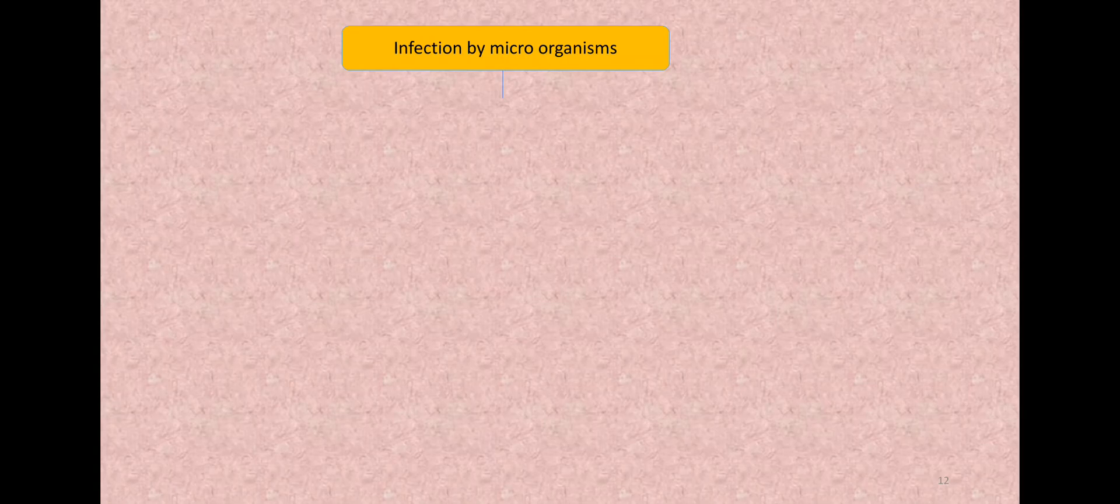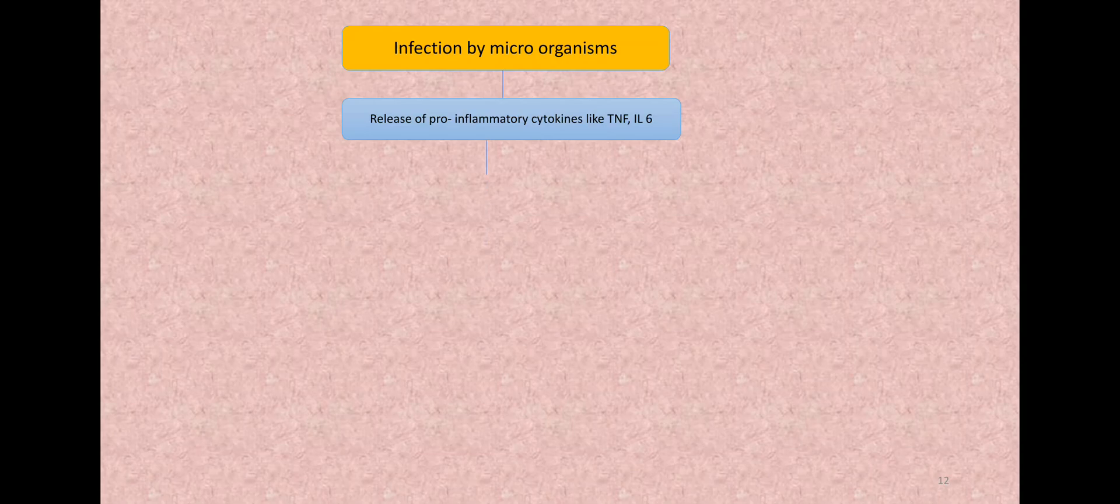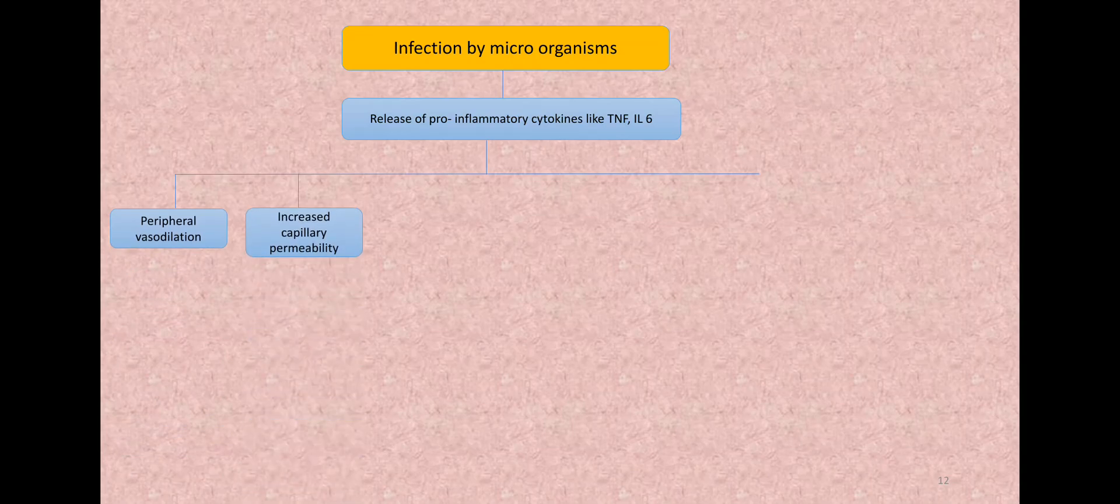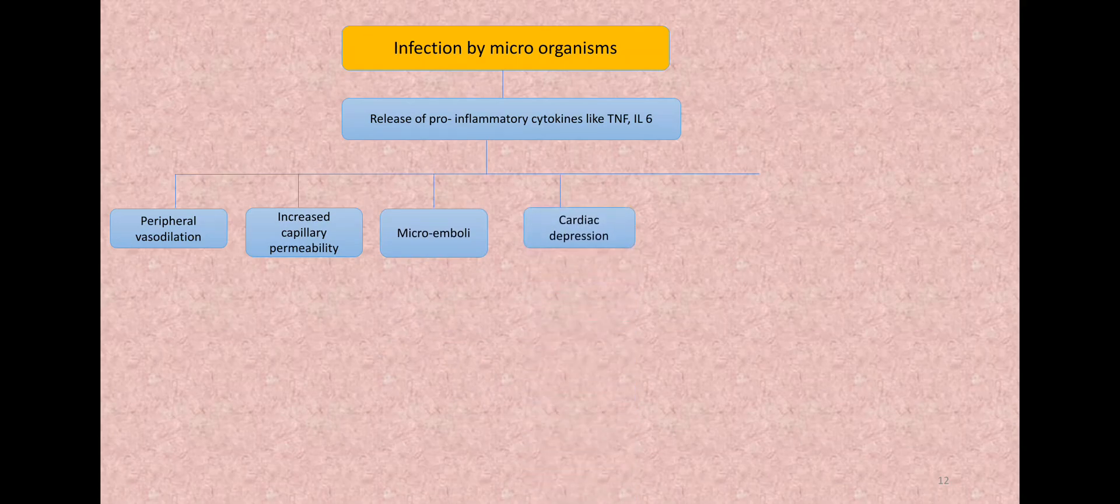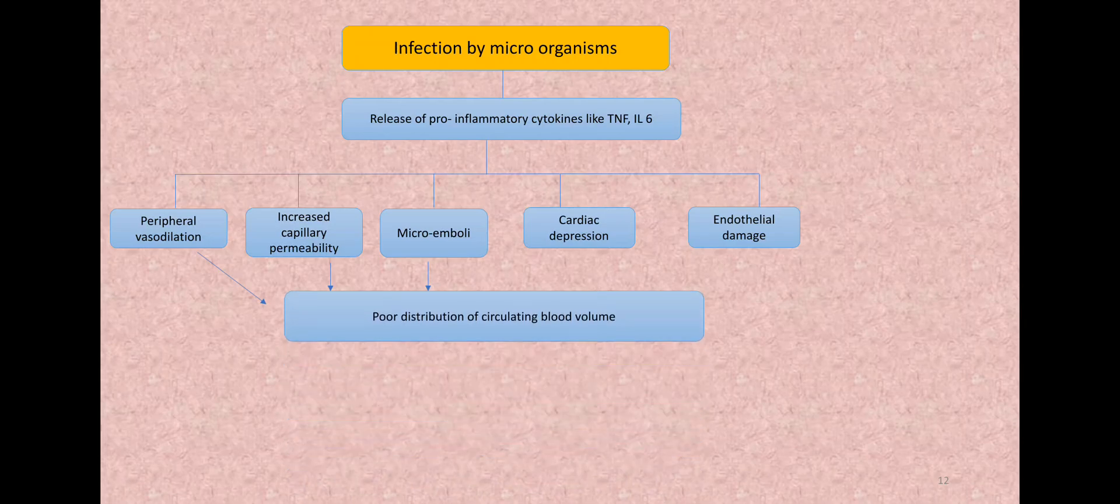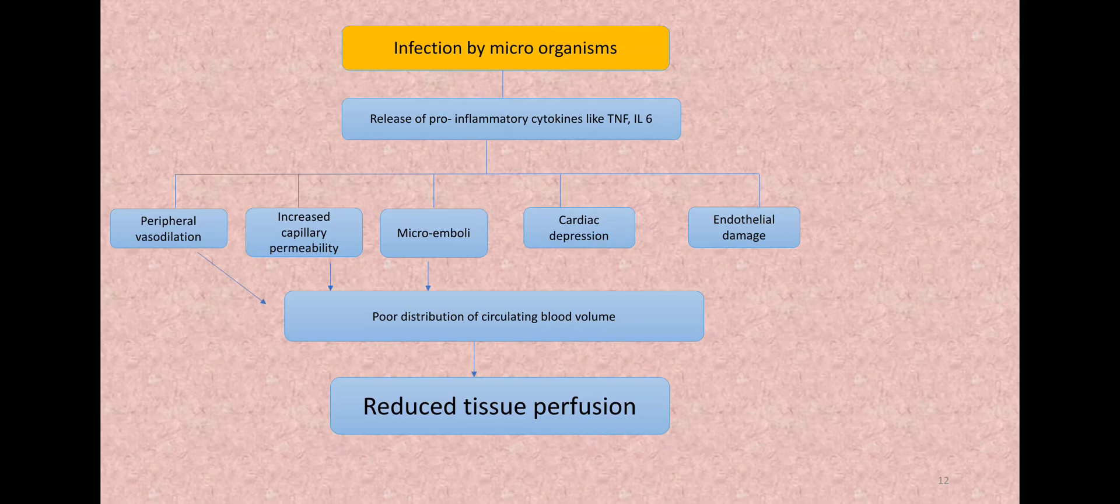So we'll just look at the mechanism. Infection by the microorganisms. There will be release of pro-inflammatory cytokines like tumor necrosis factor and interleukin-6 into the individual. So what will these cytokines do? What would be the effect on the body? These cytokines will cause vasodilatation, increased capillary permeability, so blood will ooze out of the capillaries, microemboli, small emboli, disseminated intravascular coagulation, DIC, emboli will be formed in the small vessels, cardiac depression, the myocardium will be depressed because of these cytokines, there will be damage to the endothelium.